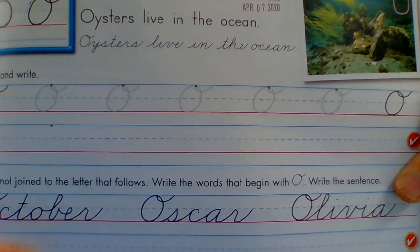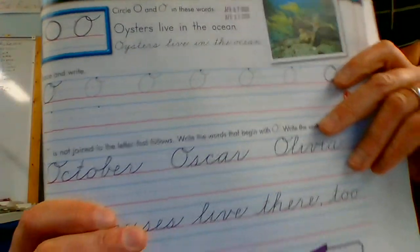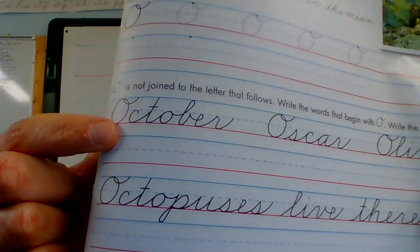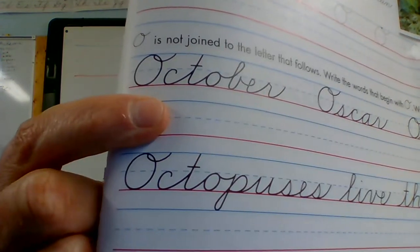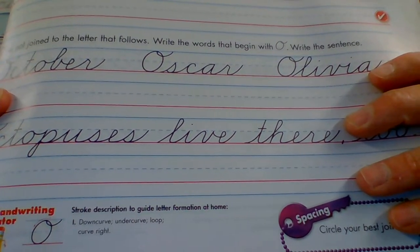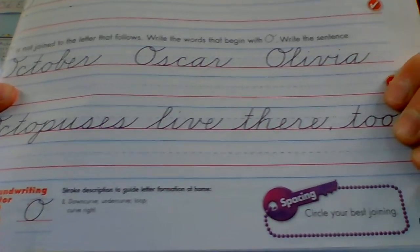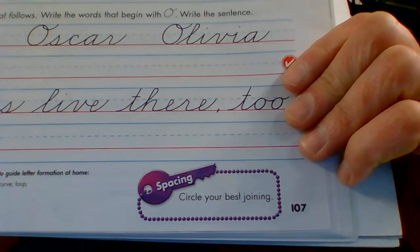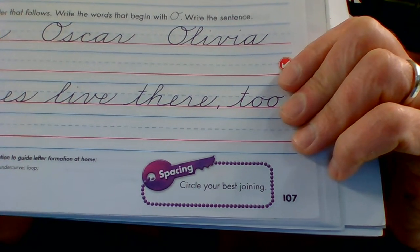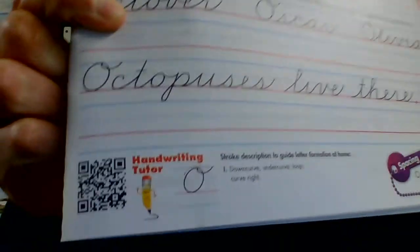Oysters live in the ocean. So the letter O, before we move on, could you read this word to me? It's a month out of the year, it's when Halloween takes place. October. This is somebody's name, my baloney has a first name it's O-S-C-A-R, Oscar. This one, I don't know if we have anybody in our school with this name. Olivia.